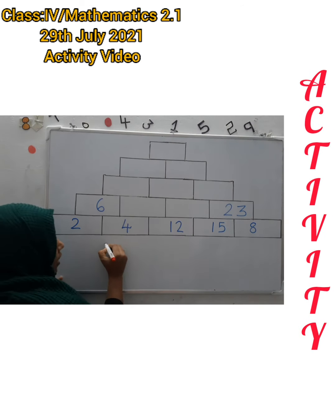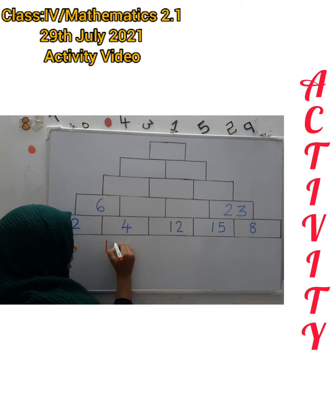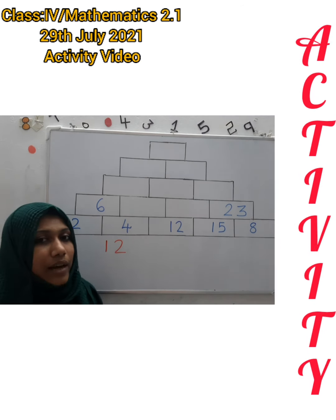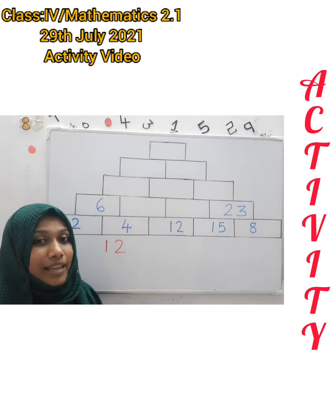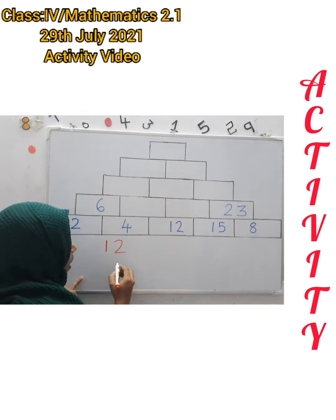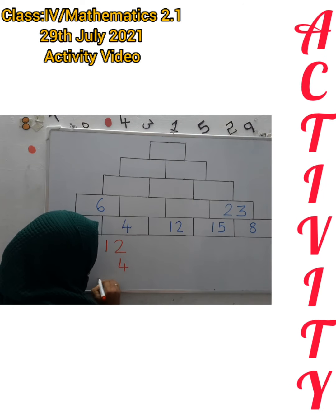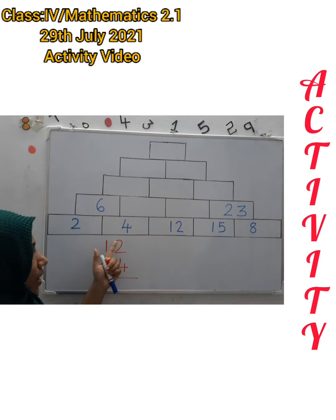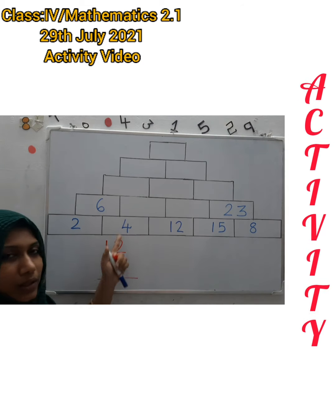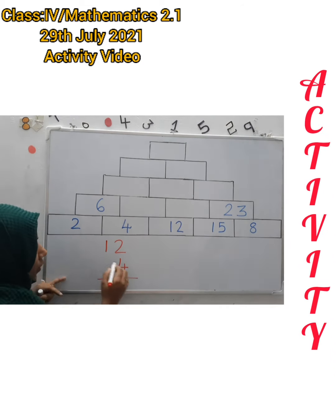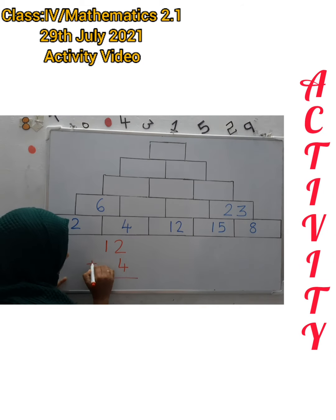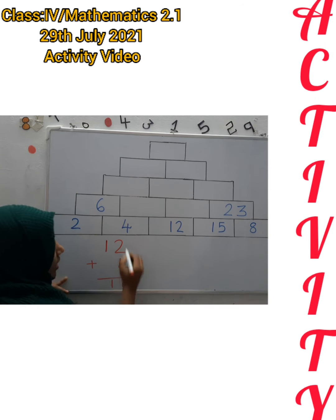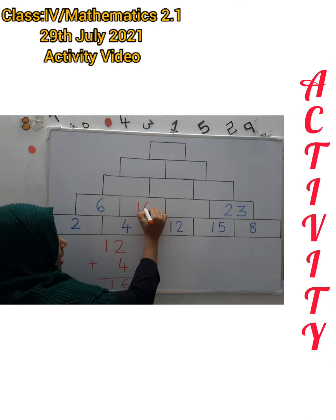First of all we write 12. Then where do we write 4? Below 2, that is below the 1's place. So 12, the 1's place is 2, and just below 2 we write 4. By adding we get 6 and 1, so the answer here is 16.